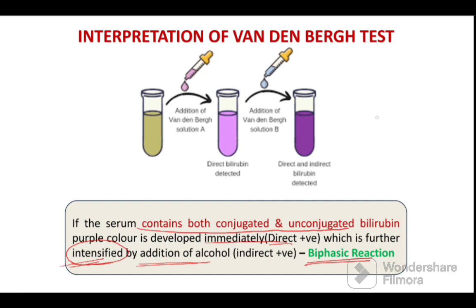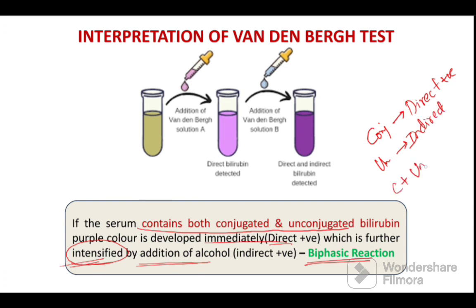If there is only conjugated bilirubin, it is called as direct positive. If there is unconjugated bilirubin, it is called as indirect positive. And if the serum has both conjugated and unconjugated bilirubin, it is called as biphasic reaction.